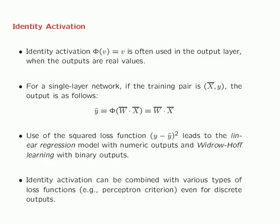The identity activation — essentially not using any activation function at all — is used in the output layer when the outputs are real values. For example, in linear regression, you would use identity activation, where the predicted output is simply the dot product between the parameter vector and the input vector. When you take this predicted value and compute the squared loss, you get a linear regression model, and the gradient descent steps are exactly identical to linear regression.